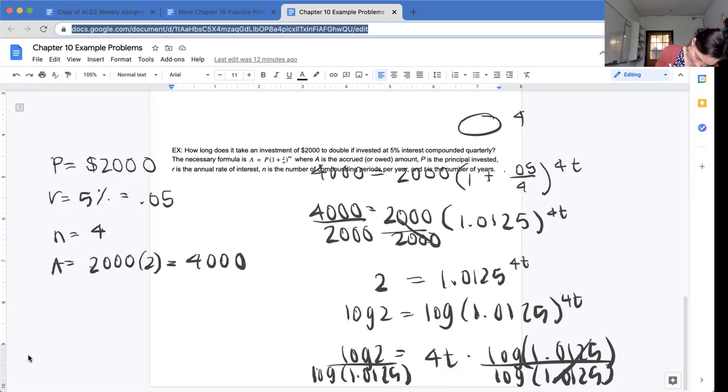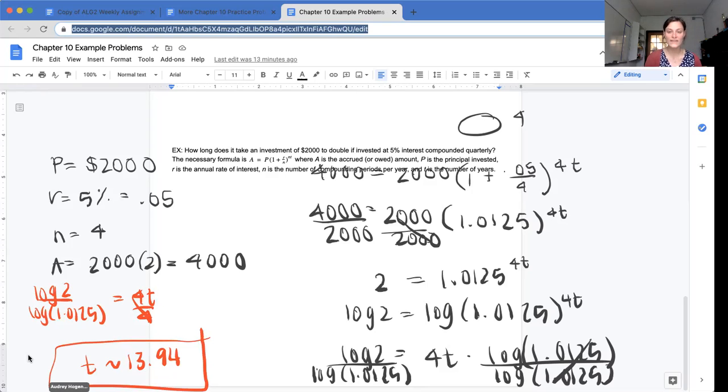So I have log of 2 divided by log of 1.0125 equals 4t. And then I'm going to figure out what that number is and divide by 4, and then you should get that t is approximately equal to 13.94. So it will take basically 14 years for your investment to double, and that's how you solve that sort of problem.